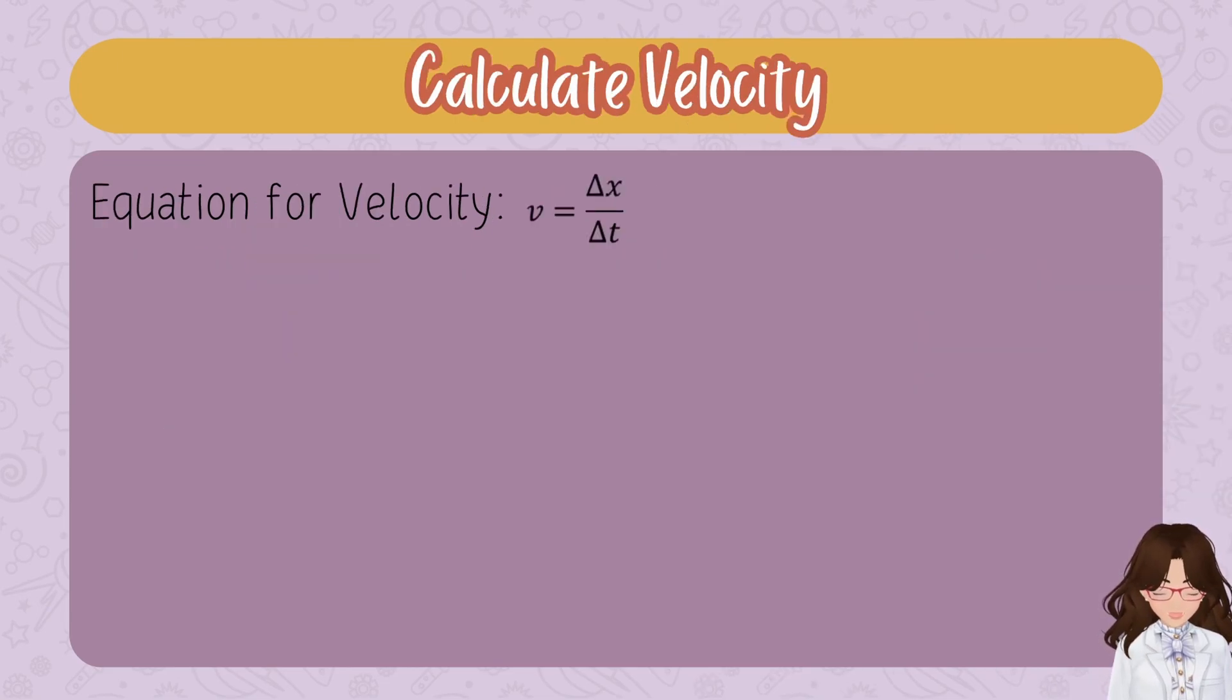Now that we've talked about how to read a motion diagram for the direct information it gives you, let's apply it. First, let's quickly review the equation for velocity. Velocity equals displacement divided by time. If you need a review of velocity, you can click the button in the upper right-hand corner for a full video on velocity.